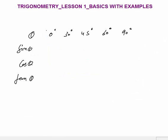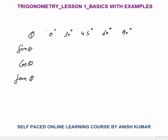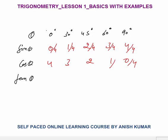Next are some basic values you must know for sine, cos, and tan. These values will not be provided in the exam — you must know them quickly. There is a fixed pattern: write 0, 1, 2, 3, 4 for sine and 4, 3, 2, 1, 0 for cos. Divide each number by 4, then take the positive square root.